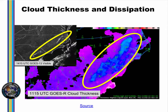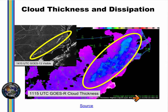This example demonstrates the utility of cloud thickness in predicting dissipation time. The larger figure shows cloud thickness, the last one before morning twilight conditions, and it shows regions of values a bit over 1,000 feet over inland North Carolina. These values suggest a dissipation time of about three hours after 1115 UTC. The inset 1415 UTC visible imagery shows remnants of the fog bank. It dissipated completely shortly after 1430 UTC.